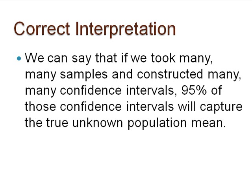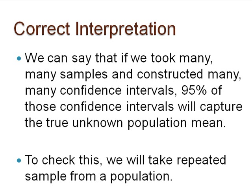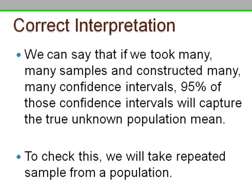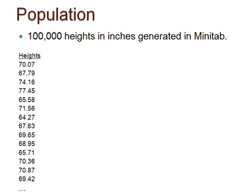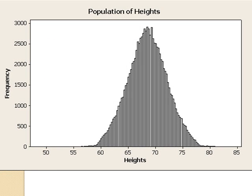To check this, we will take repeated samples from a population. Assume that the 100,000 heights generated in Minitab is our population. We can see that the shape of the histogram is approximately normal. The mean is 68.495 and the standard deviation is 3.565. These values are population parameters, but for this illustration, let's pretend that sigma is unknown.